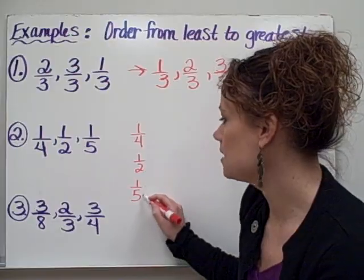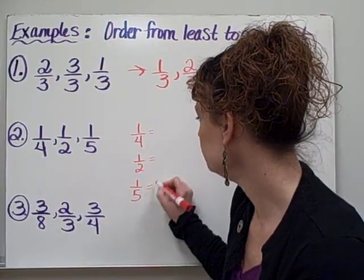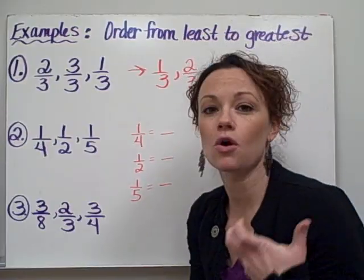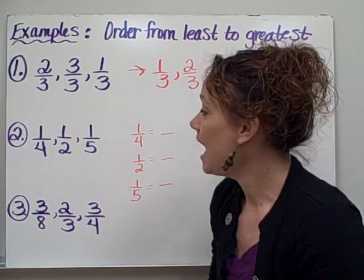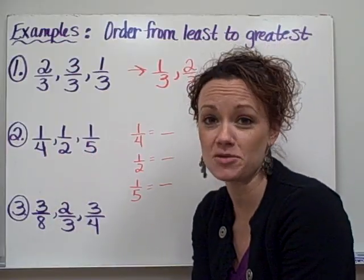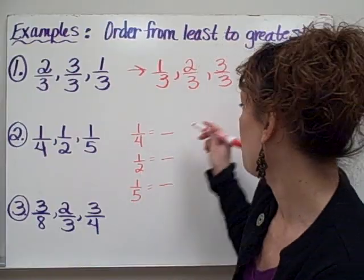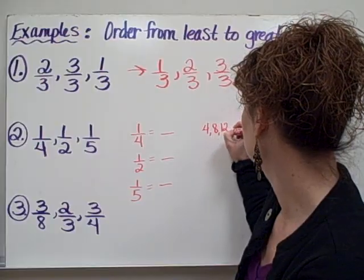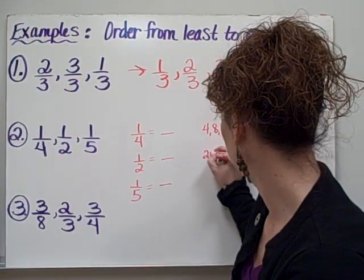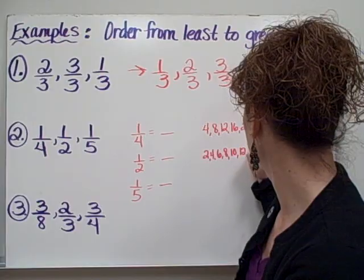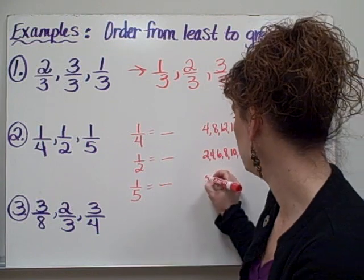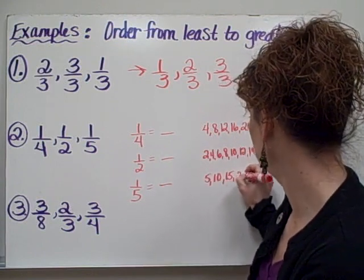Our goal is to find a denominator that we can use for all of those fractions that's exactly the same. And the way we find that is by listing out each of the times tables for each denominator and finding a number that they have in common. So let's go ahead and do that. I'm going to list my 4 times table: 4, 8, 12, 16, 20, 24. I'm going to list my 2 times table: 2, 4, 6, 8, 10, 12, 14, 16, 18, 20. And my 5 times table: 5, 10, 15, 20, 25.